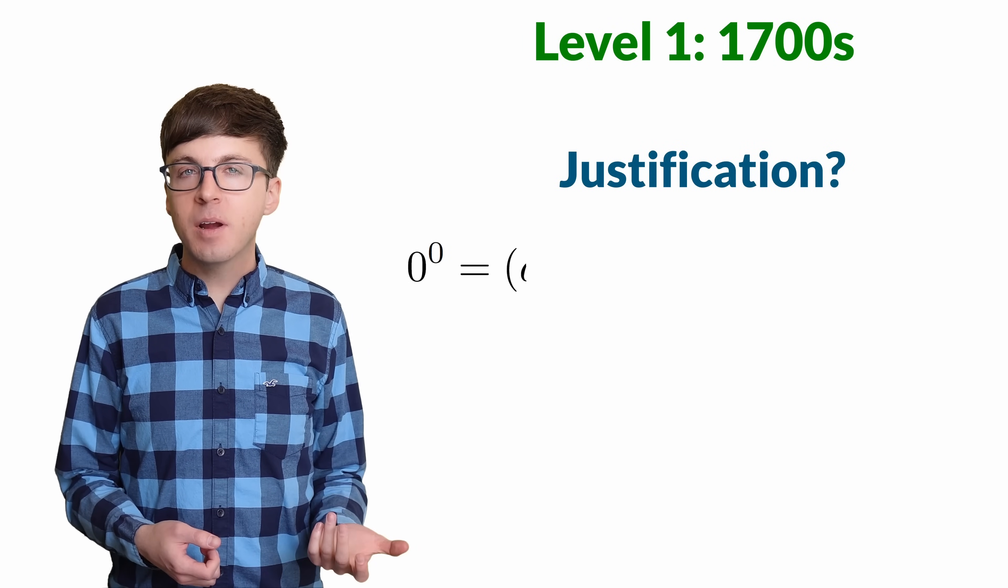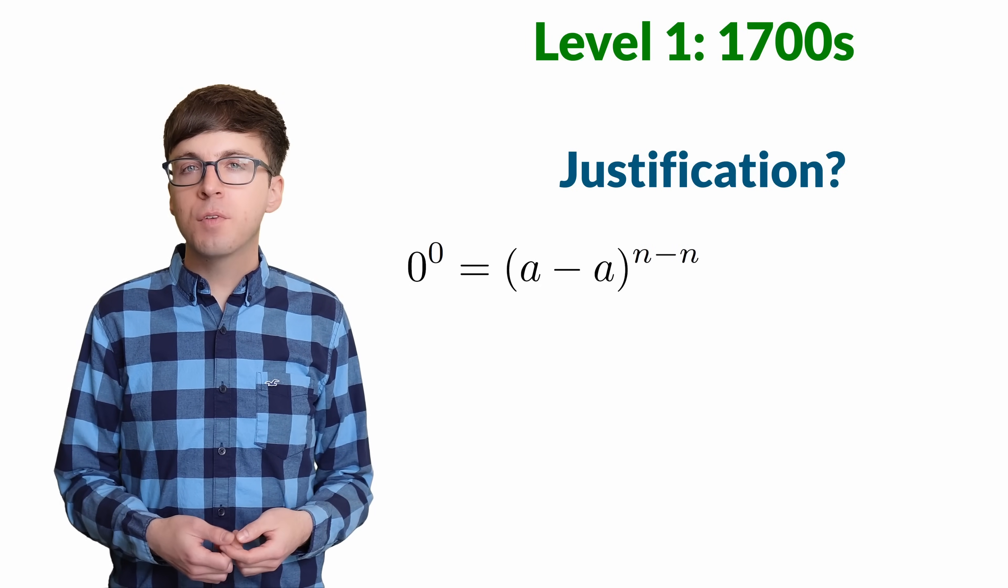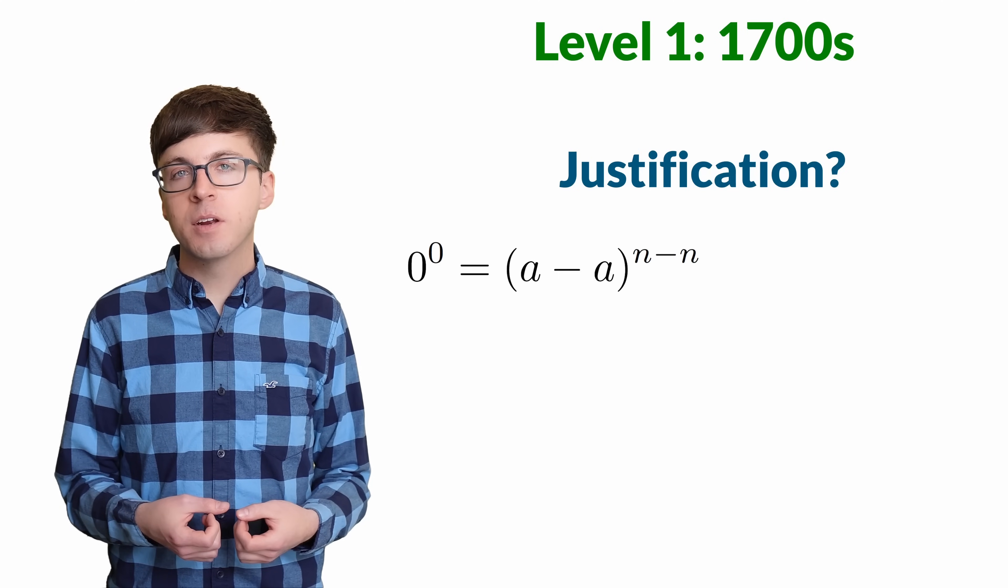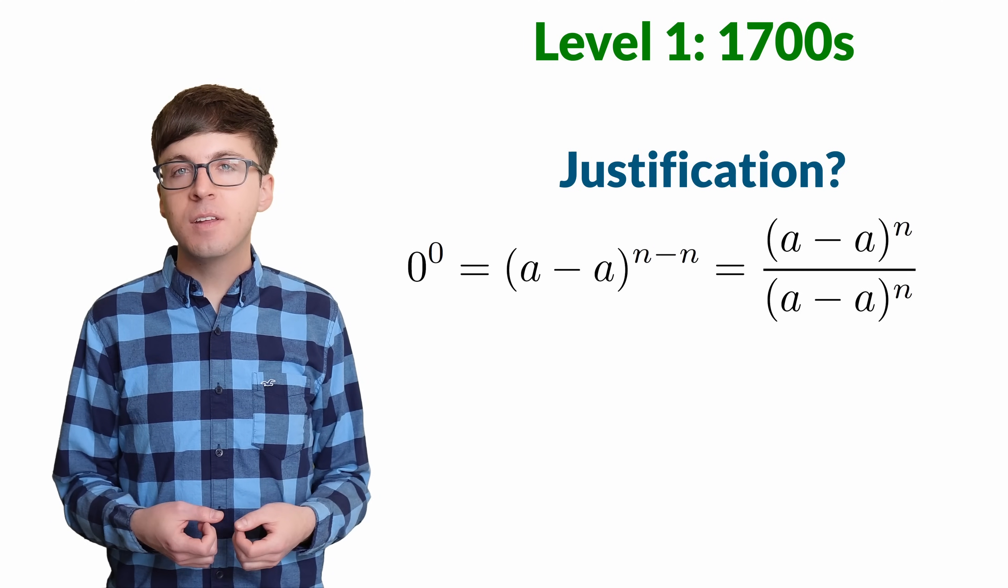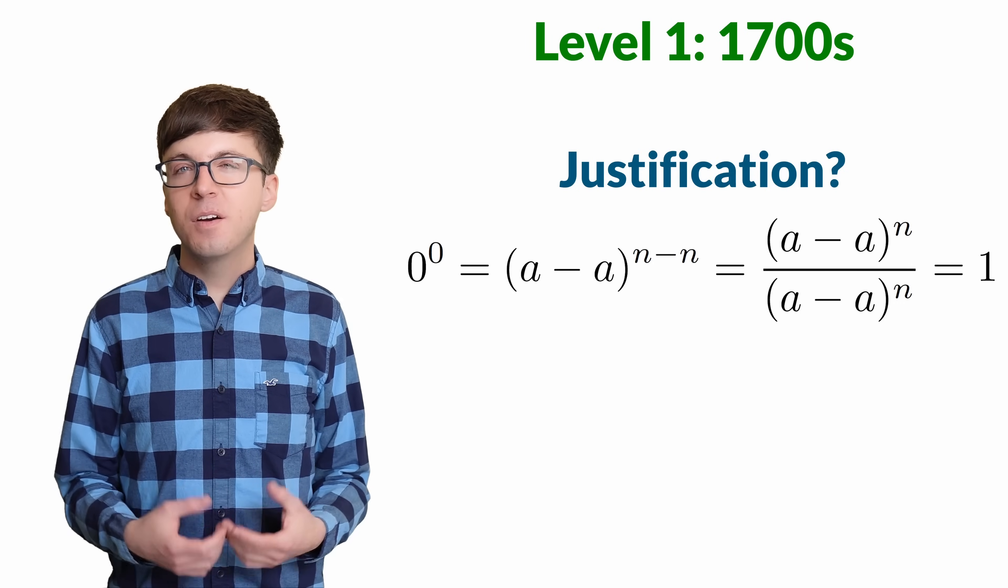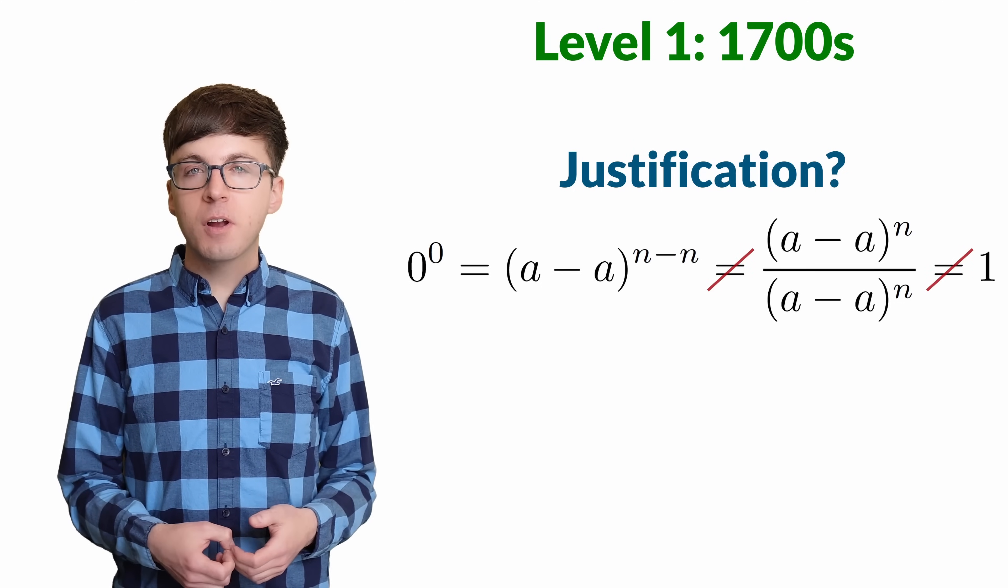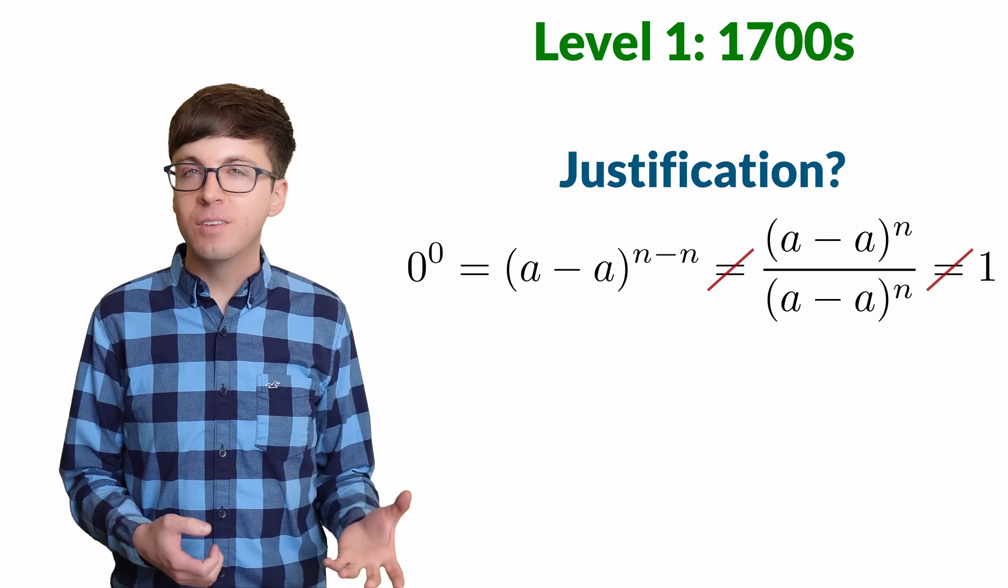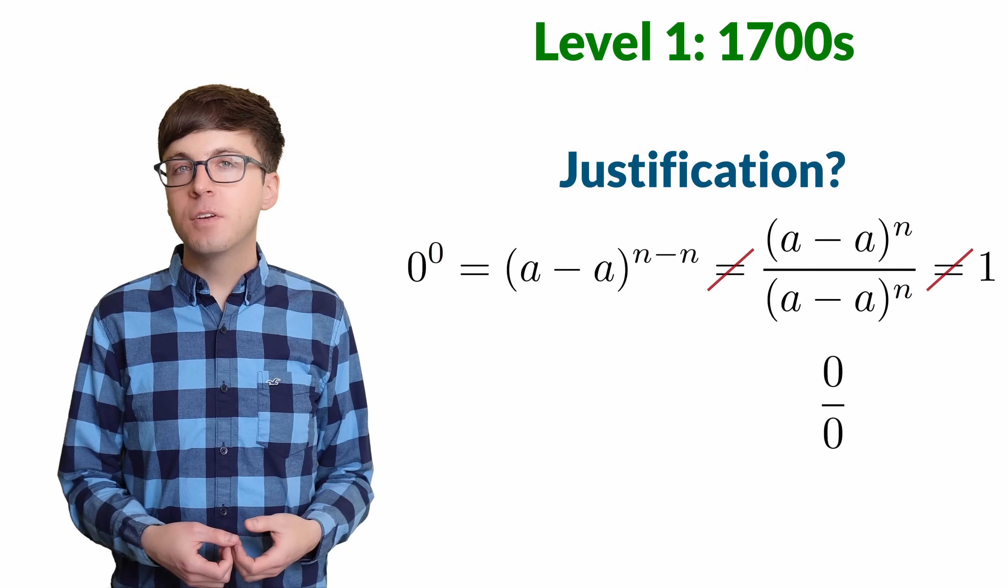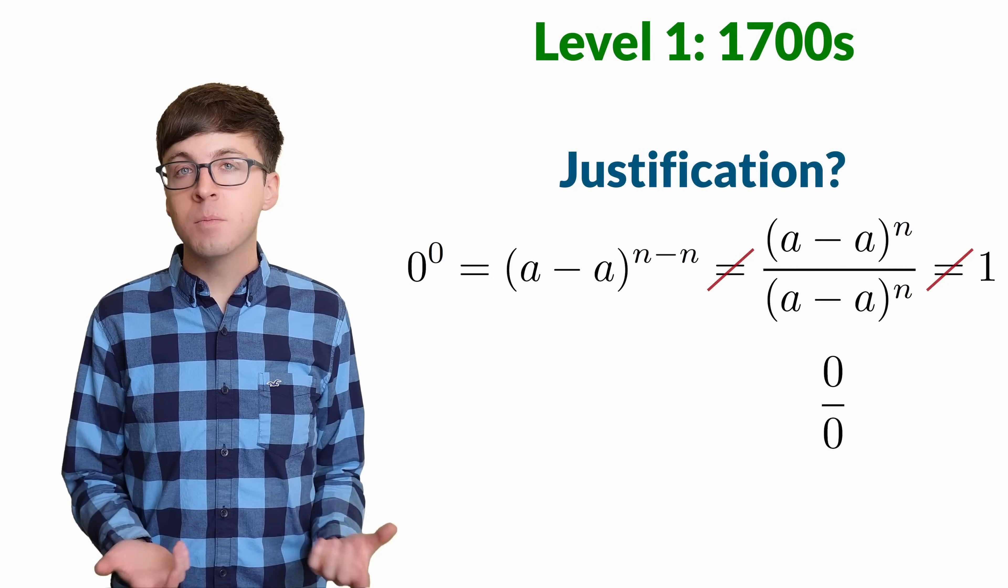Zero to the zero equals (a minus a) to the (n minus n). Then let's turn this into a fraction with the positive part of the exponent in the numerator and the negative part in the denominator. We have (a minus a) to the n over (a minus a) to the n, which cancel out to give one. Okay, this justification doesn't really work, since the fraction we just tried to cancel out is actually zero over zero. Even though this justification is flawed, Euler's definition that zero to the zero equals one actually does make sense in many contexts.